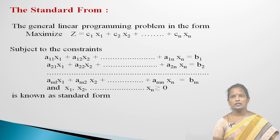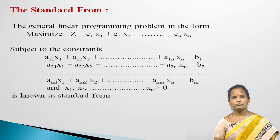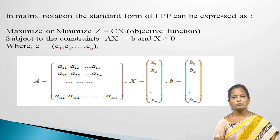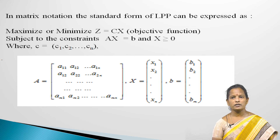Standard Form: The general LPP in which all constraints are expressed as equations is known as the standard form. In matrix notation, the standard form can be expressed as: maximize or minimize Z equal to Cx (objective function), subject to AX equal to B and X greater than or equal to 0. Where C is the row matrix [c1, c2, ..., cn], A is the m×n matrix, X is the column matrix [x1, x2, ..., xn], and B is the column matrix [b1, b2, ..., bm].